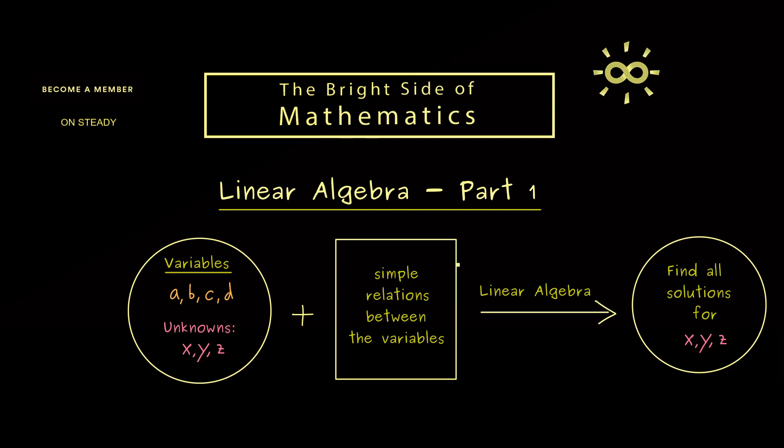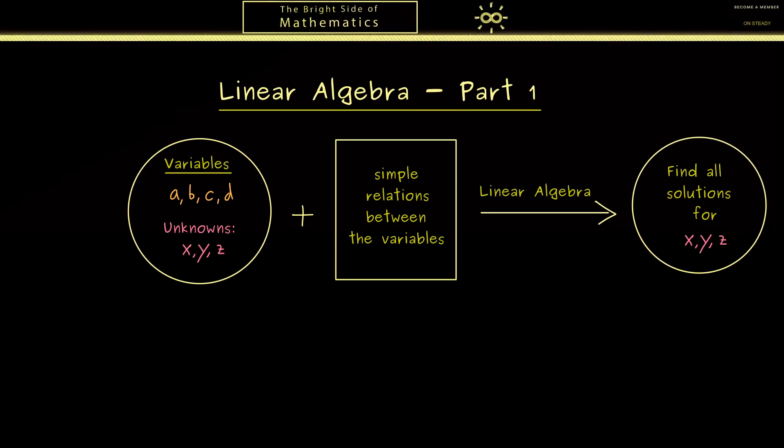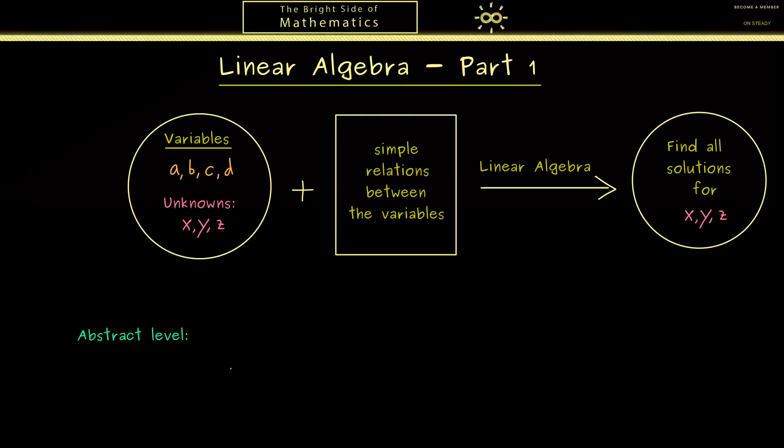Indeed this is important, but in order to really understand the topic as a whole we need to go abstract. Therefore this abstract level is something I also will discuss in this course. For example on this abstract level we will find a fundamental concept we call a vector space.